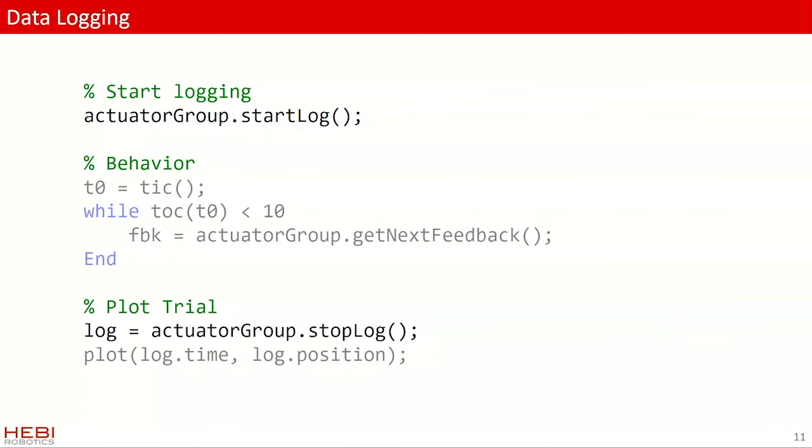So the code for this looks like this. I grayed out the non-important parts for this. So it's just start log and stop log. And then what stop log returns is essentially the same struct as before. But now instead of vectors, we have matrices of everything, which then interfaces really well with the MATLAB plotting libraries. And so the last call there would give us a plot of all the positions of all the actuators over the entire period of logging time,